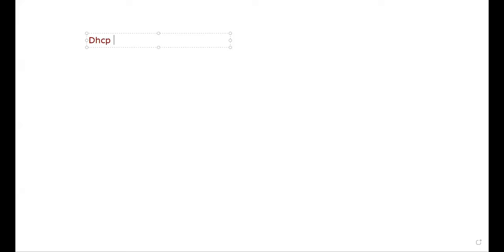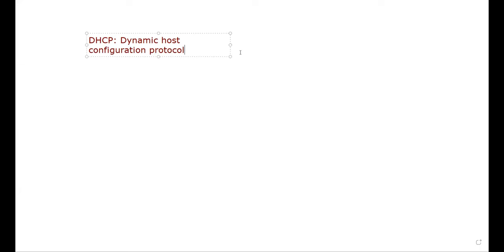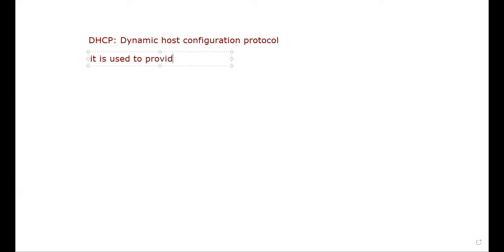We are going to start one topic again - DHCP. In our last videos we have done so many practicals but I forgot to let you know about this topic. Dynamic Host Configuration Protocol is used to provide IP addresses automatically, mainly to LAN devices. But yes, with the help of DHCP you can provide IP address to a router also if you want.